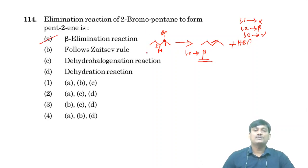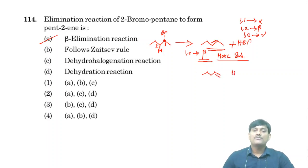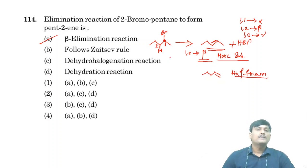This reaction follows Zaitsev's rule. The product observed is a more substituted alkene. If you get a more substituted alkene, the reaction follows Zaitsev's rule. If you get a less substituted alkene, it follows Hofmann's rule — that would be the Hofmann product. Here we are getting the more substituted product, so it follows Zaitsev's rule. This option is also correct.